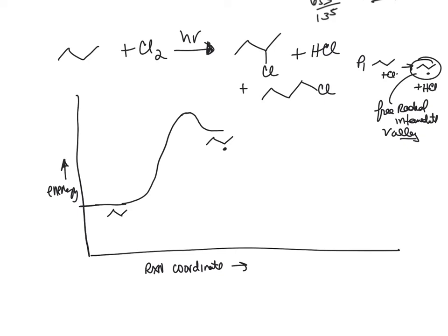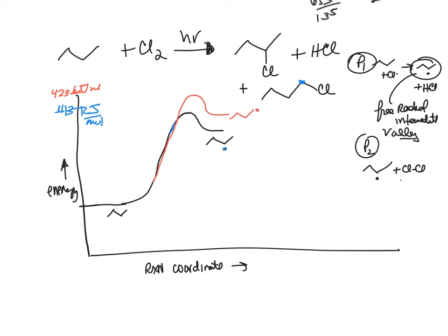The secondary C-H bond costs 413 kJ/mol to break, so the secondary free radical intermediate is at a lower energy than the primary (which would cost 423 kJ/mol), making the secondary intermediate a little lower on the diagram. Those are your two possible valleys depending on which hydrogen is removed. That's propagation step 1. Propagation step 2 then requires going over another energy hill to reach the final product.